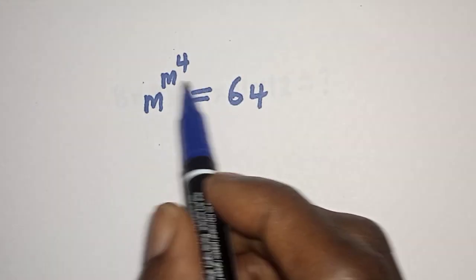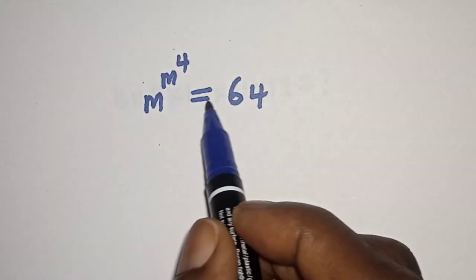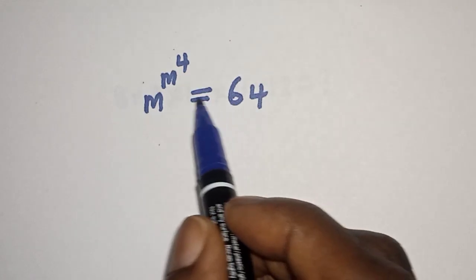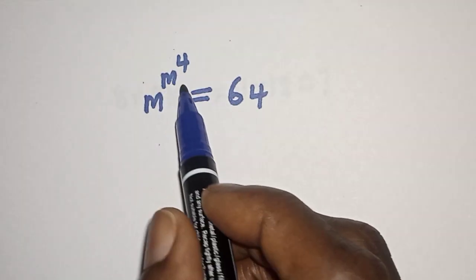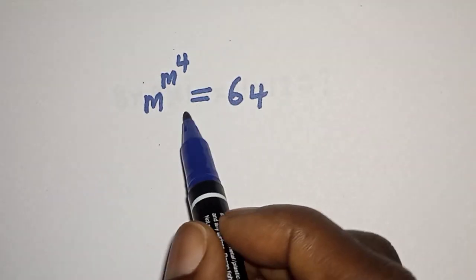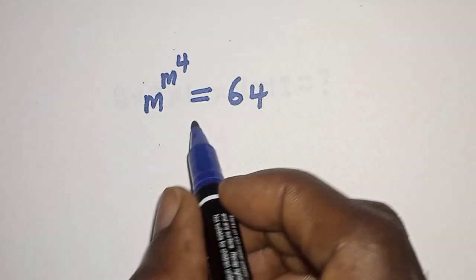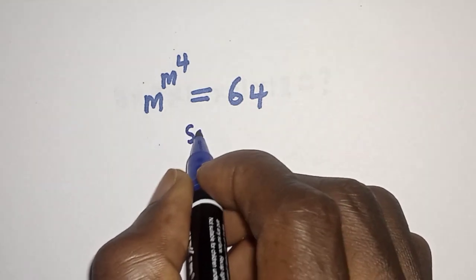Hello, welcome to Magis. In this class we want to find the value of m from this equation: m raised to power m raised to power 4 is equal to 64. Like, share, comment and subscribe.